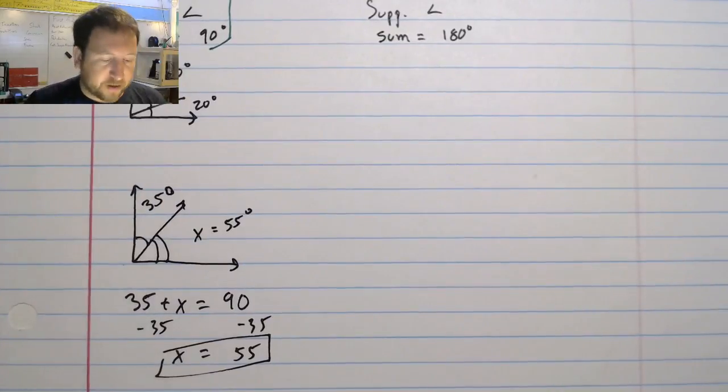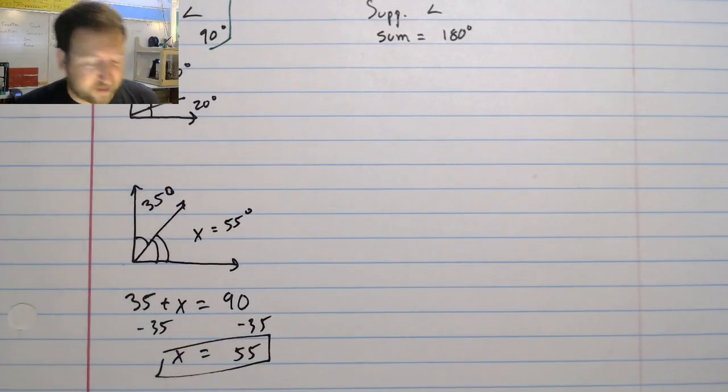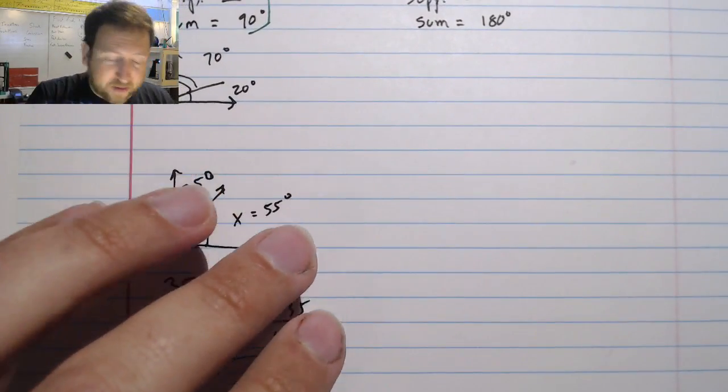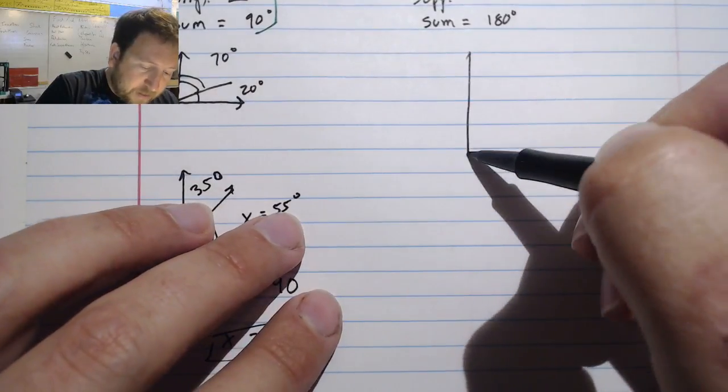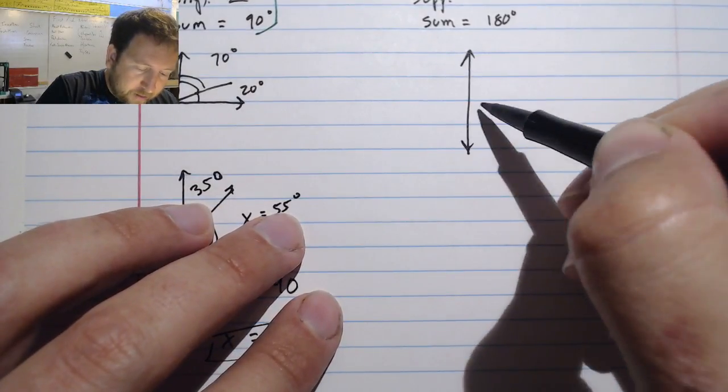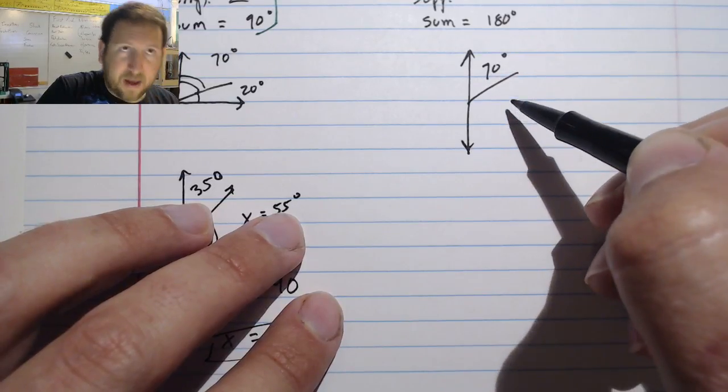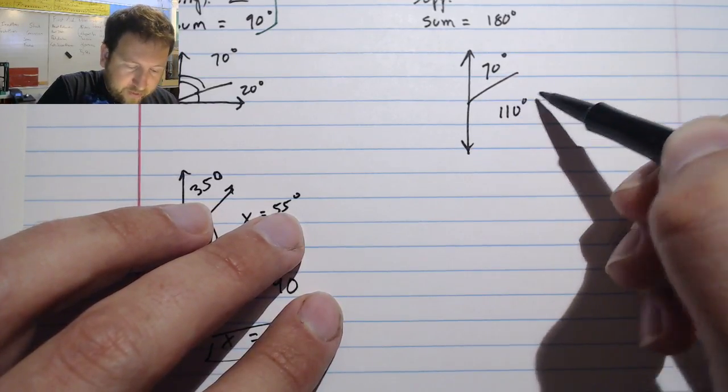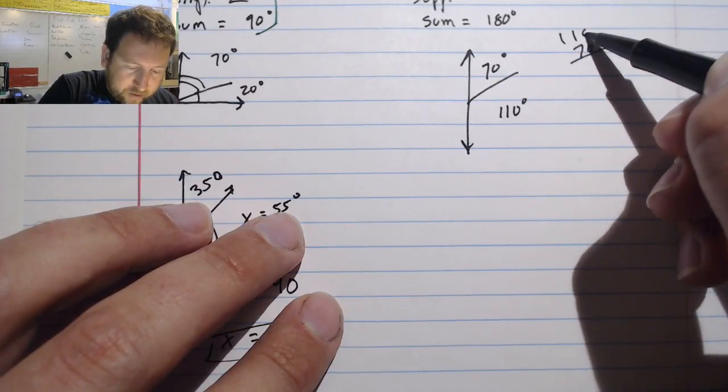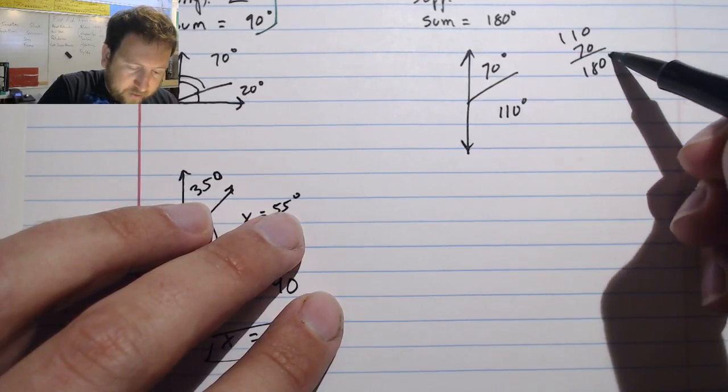I'm going to do the same thing with my supplementary angles. It should be very similar, so I will probably do this a little bit faster. My supplementary angles, remember, look like this. I may have, let's see, 70 degrees and I may have 110 degrees. Because 70 and 110 are 180 degrees.